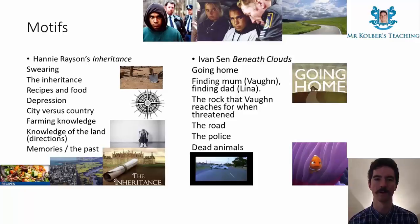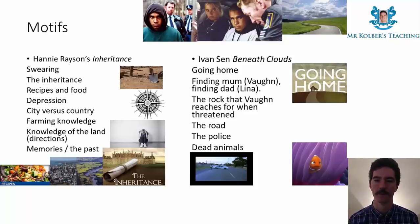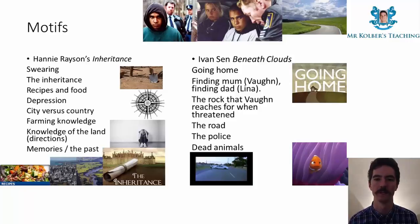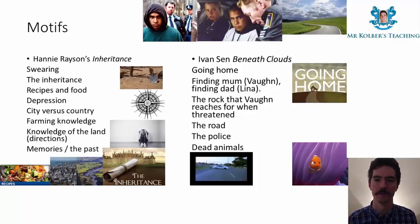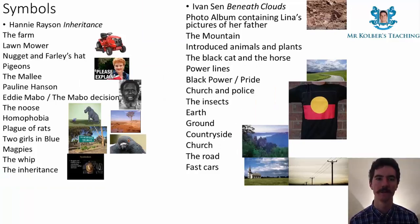Another motif is the road — the two characters traveling alongside cars and sometimes in them, but mostly traveling along the road as a duo. The police are a constant presence even though they're not on screen for long; they are something to be avoided, hidden from, and at times fought. Dead animals and introduced animals also come up again and again as motifs, with many dead animals visible along the road as the characters travel.